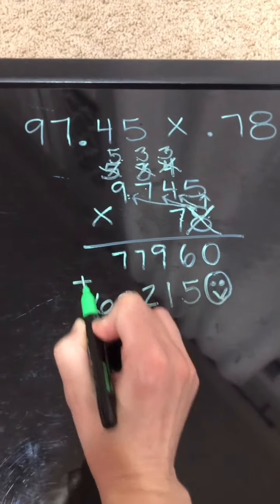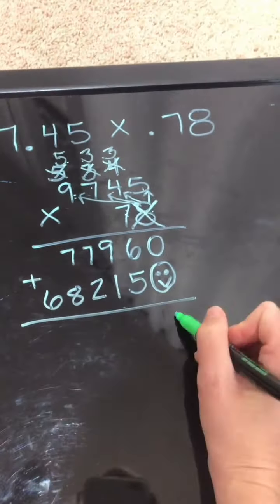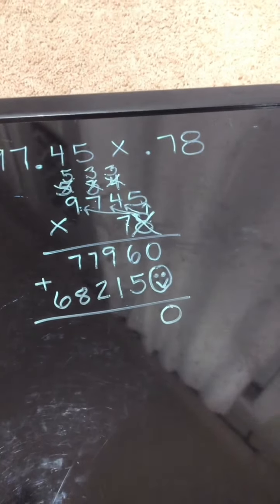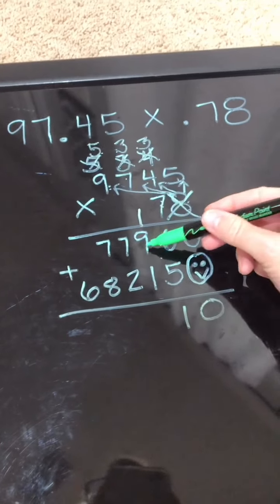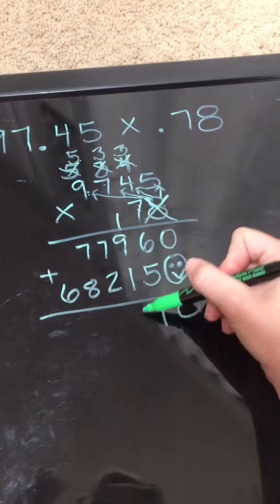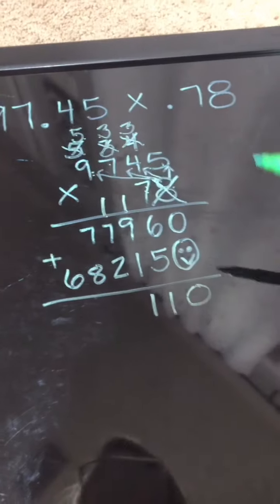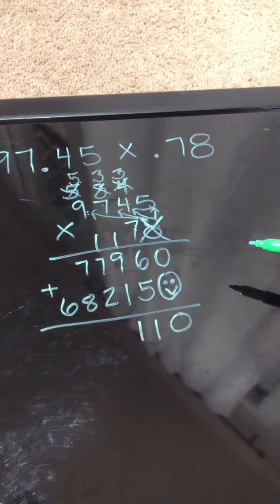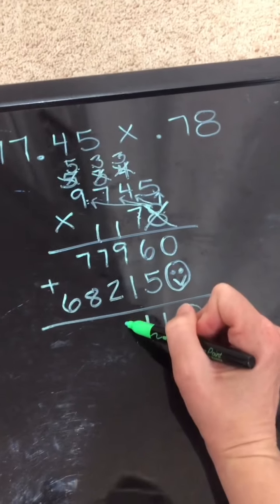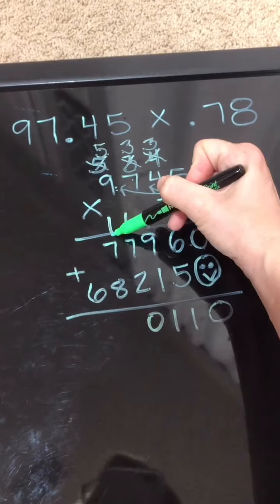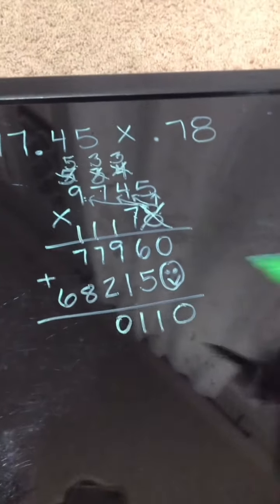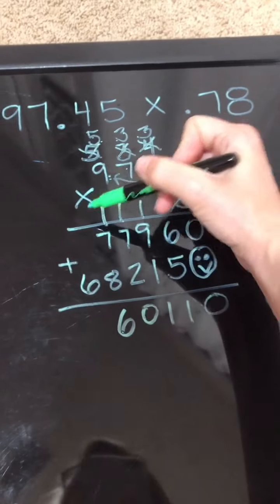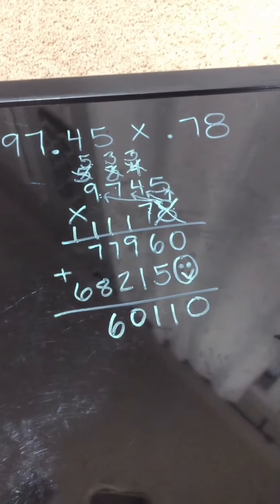Now I'm going to add them together. 0 and 0 is 0. 6 and 5 gives me 11. 9 and 1 is 10 plus 1 gives me 11. 7 and 1 is 8 plus 2 gives me 10. 7 and 8 gives me 16. And 6 and 1 gives me 7. So now I have this number 7601110.